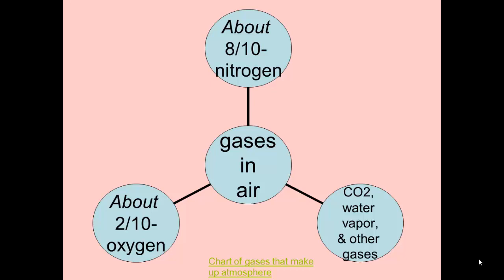Take a very deep breath. You now probably have about 3 liters of air in your lungs. The air has many gases in it. About eight tenths of the air is nitrogen and about two tenths is oxygen. A very small part of the air is carbon dioxide, water vapor, and other gases. No other planet in this solar system has air like Earth's.